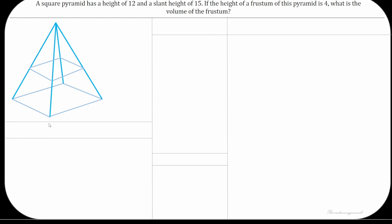A square pyramid has a height of 12 units and a slant height of 15 units. The height of the frustum of this pyramid is 4 units. Find the volume of the frustum.